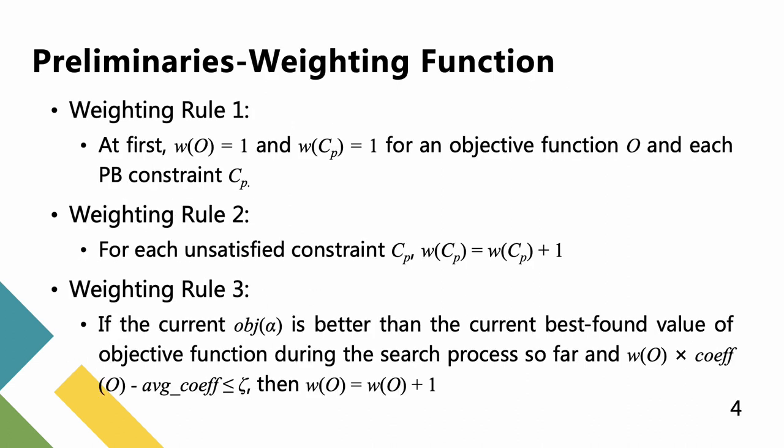Constraint weighting techniques have usually been used to guide the search process. Each PB constraint Cp and an objective function O have the property of weighting, denoted as w(Cp) and w(O). The property of weighting works as follows.